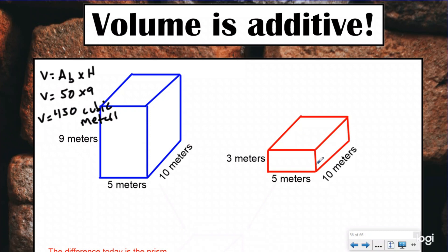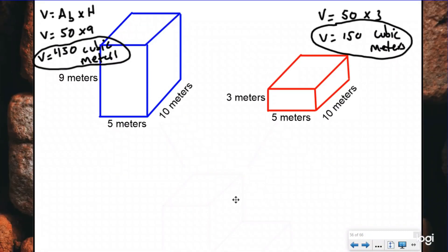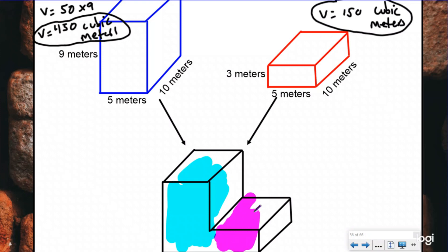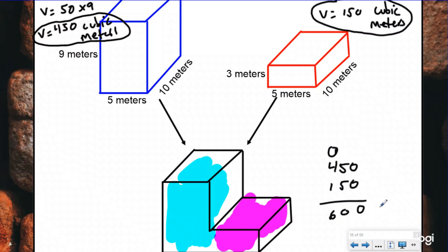Over here I have a length and a width of 5 and 10, that's 50. So if I do my volume formula — area of the base times the height — I get 150 cubic meters. If I then took those prisms and put them together, to find the total volume I would just add the two pieces together. So the blue prism and the purple prism together give me 450 plus 150, which is 600 cubic meters.